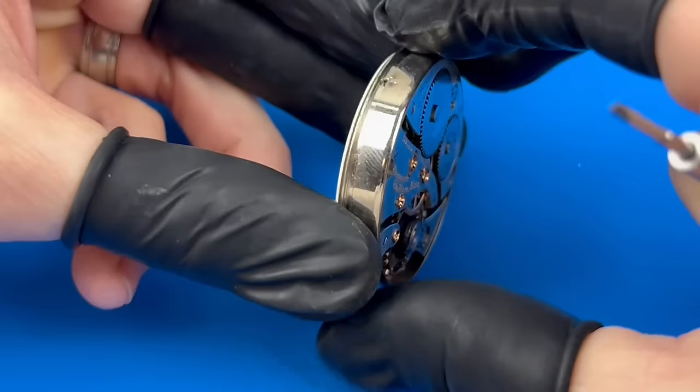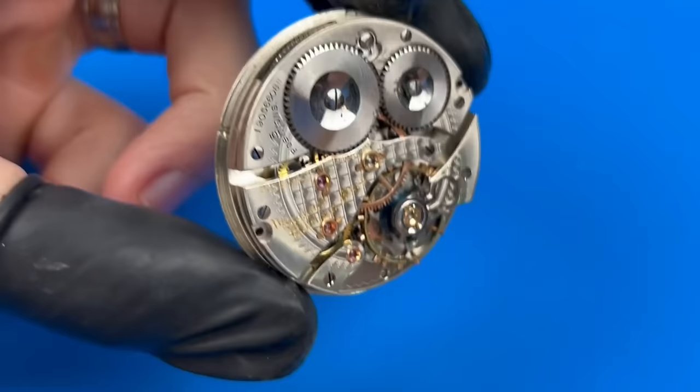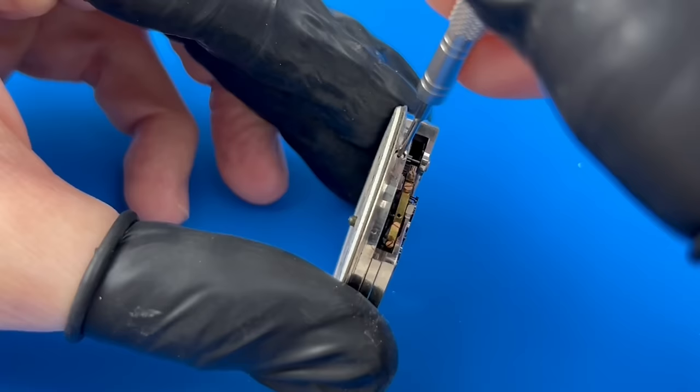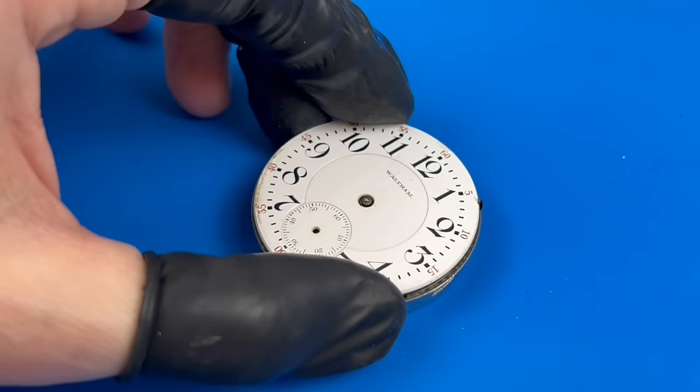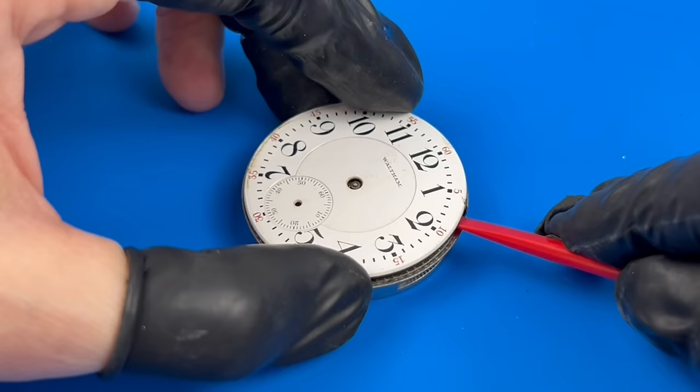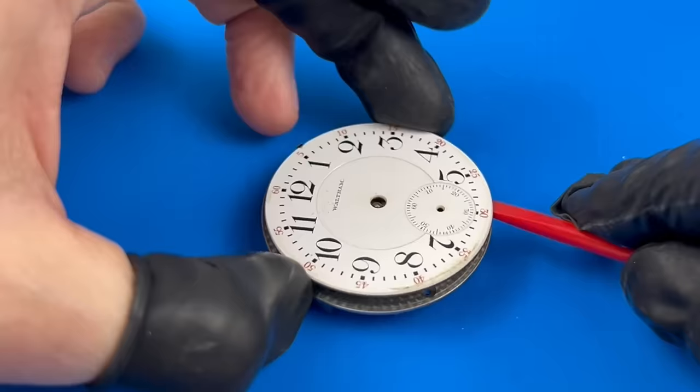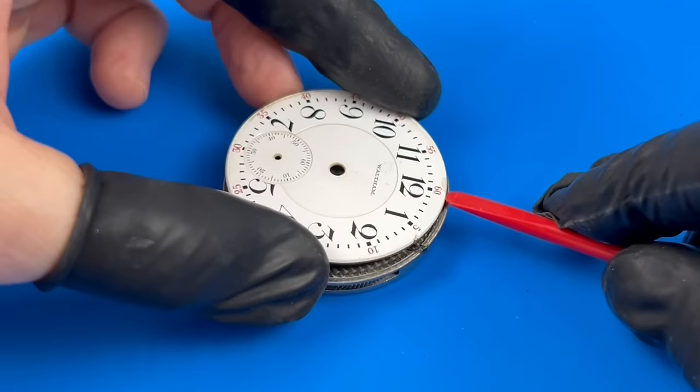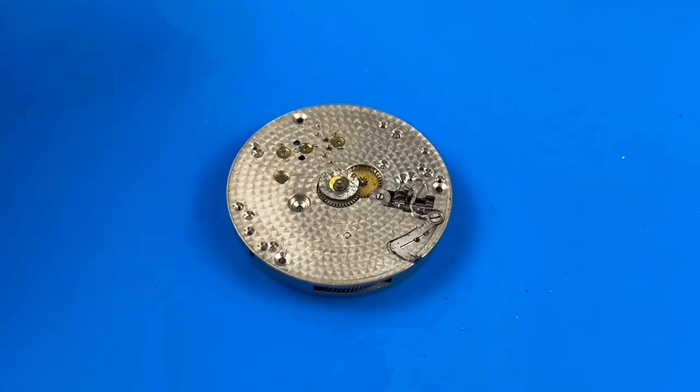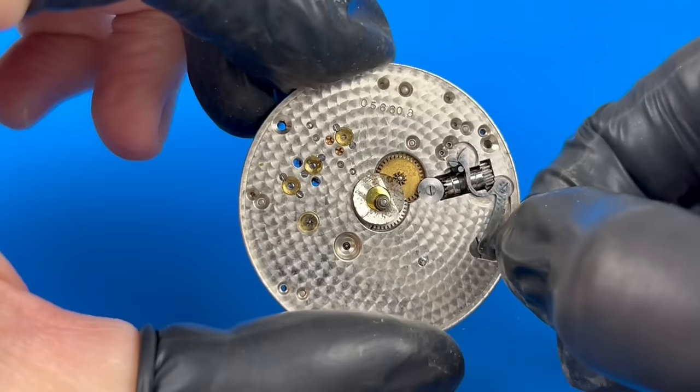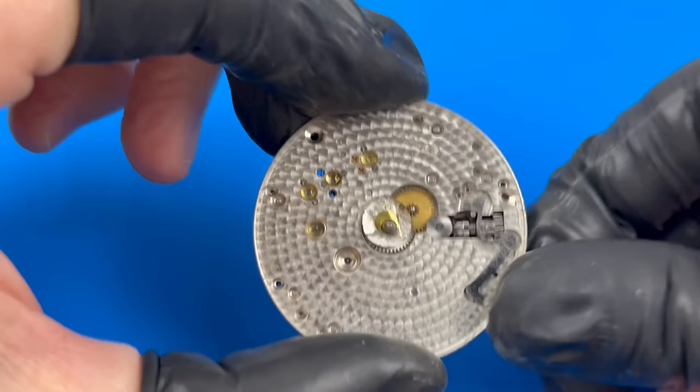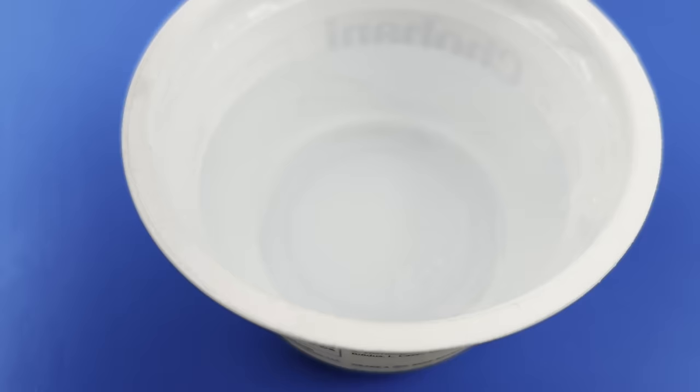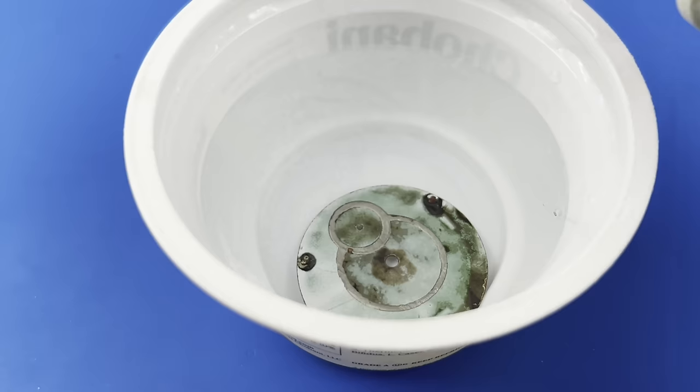Removing the dust ring exposes the dial foot screws. Loosening these a bit allows me to carefully lift the dial away from the front of the movement. Denture cleaner tabs are a safe and effective way to clean up enameled dials.